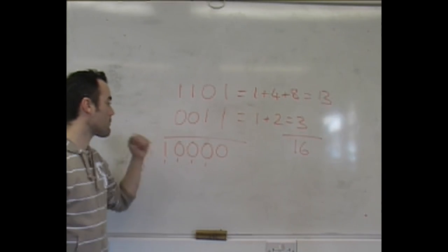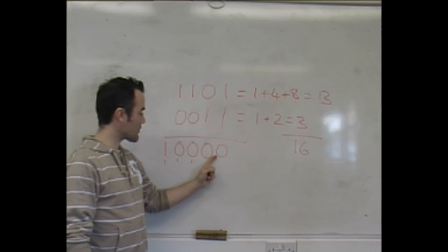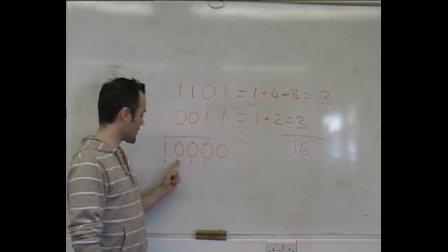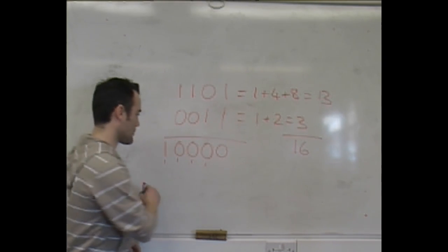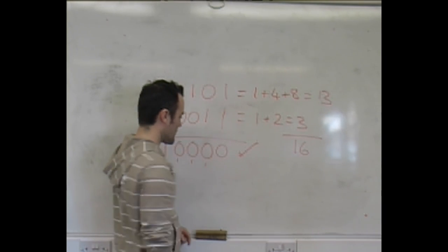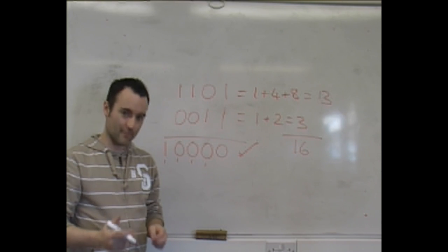And if we remember our place values in binary—1, 2, 4, 8, 16—we can know that that's correct. Thank you.